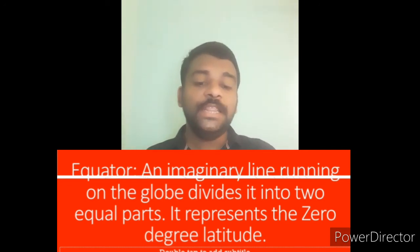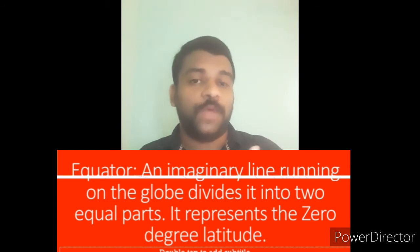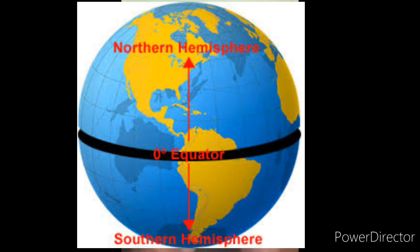Next, we can discuss another imaginary line. Did you see a horizontal line? This line is known as the equator. Equator is zero degrees. This equator divides the globe into two equal halves — the upper part and the lower part. The upper part is known as the Northern Hemisphere, and the lower part is known as the Southern Hemisphere.